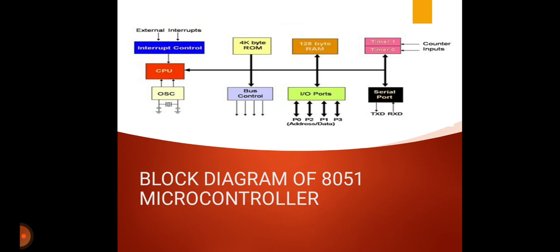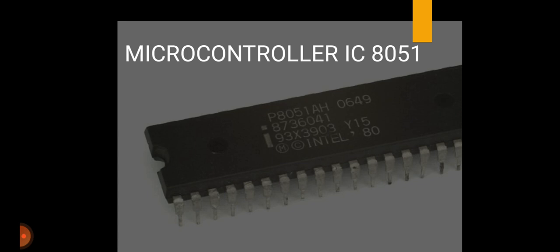This is the block diagram of the 8051 microcontroller. It consists of interrupt control, CPU, oscillator, 4 KB ROM, bus control, 128-byte RAM, I/O ports, Timer 0, Timer 1, counter ports, serial port, etc. This is the microcontroller IC 8051, which is developed by Intel.